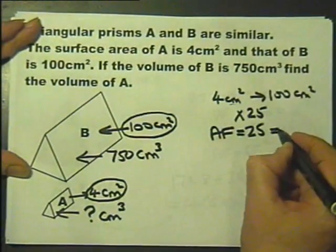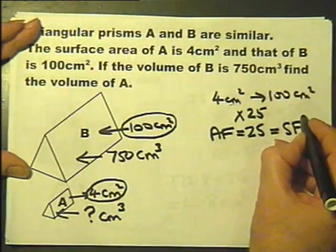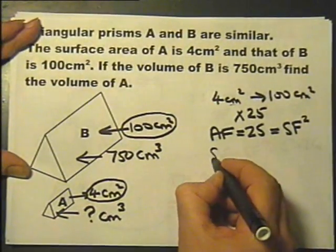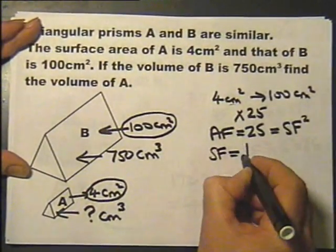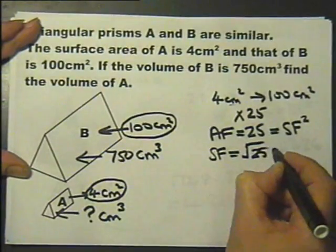And the area factor is the scale factor, the linear scale factor squared. Therefore the linear scale factor itself must be the square root of 25, which is 5.